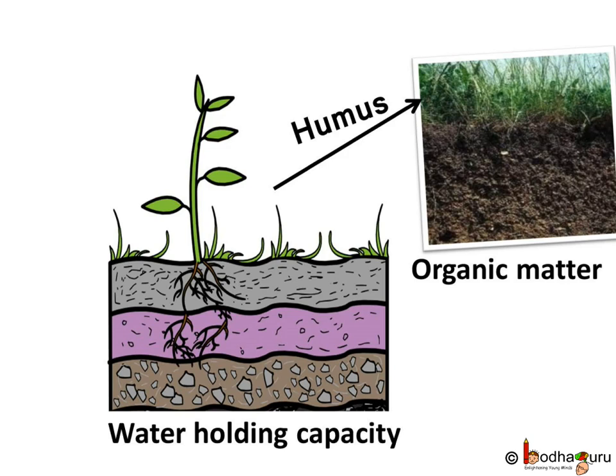So, the fertility of soil can be described in terms of soil's organic matter content and water holding capacity, which is dependent on soil component and structure, also the rate of biological activity in the soil. Thus, all these factors decide how supportive that soil is for the growth of plants.